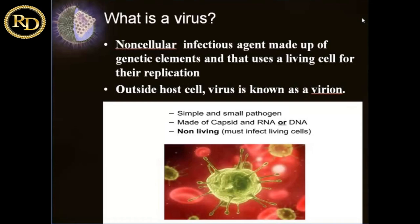You can call viruses very opportunistic. As soon as they come in contact with a living cell, they take the opportunity and try to use the machinery of the host to replicate. So a single virion, rich in genetic material to cause infection, has the potential to cause disease in a living animal.